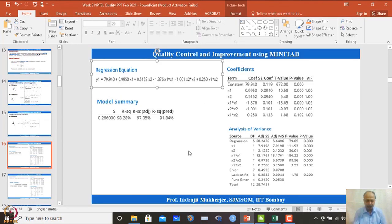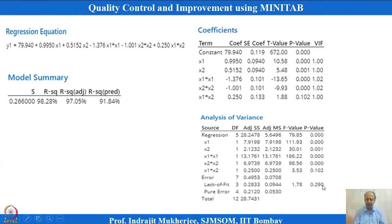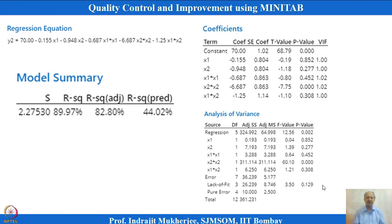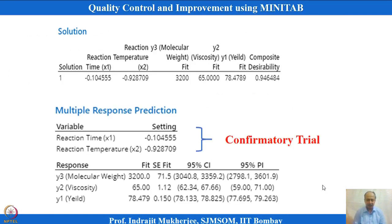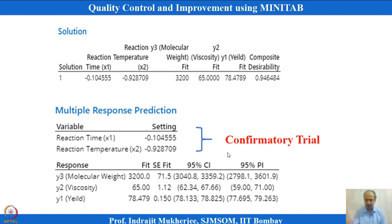This is what we wanted to explain in this session on multiple response optimization. You can change the equations and derive solutions accordingly. The more accurate the response surface, the more accurate will be the results. Another recommended setting from MINITAB gives a composite desirability of 0.94. Solutions can change also. Finally, what we have to do is make a confirmatory trial at the reaction time setting condition that MINITAB predicts, and figure out the actual outputs. Actual values will only be seen when we do confirmatory trials.